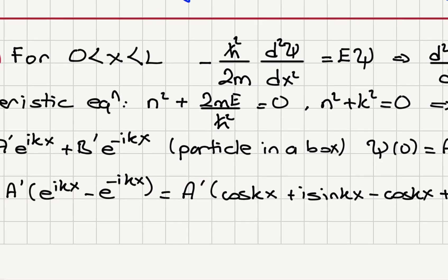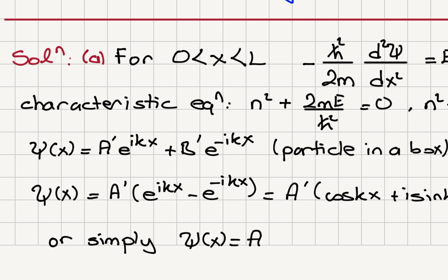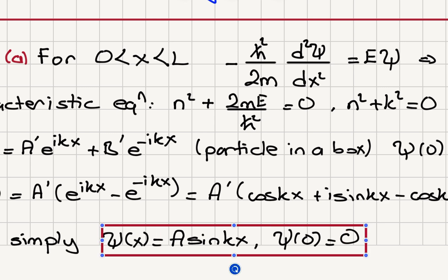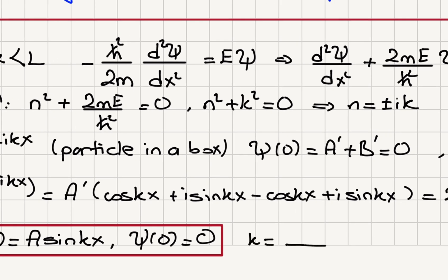We can write the solution simply as ψ(x) = A·sin(kx), with normalization factor A, and ψ(0) = 0 is satisfied. These sine functions satisfy the solution, where k = √(2mE)/ℏ.